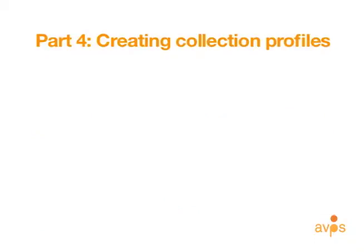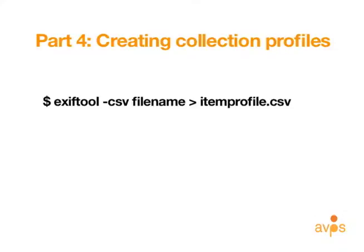Before we jump into creating a collection profile, let's review how to create an item level profile. The syntax here includes the tool name, the CSV export option, the file name, and a redirect bracket that will create a CSV called item profile in the working directory. The result of this would be EXIFTOOL standard output for a specified file exported and formatted as a CSV file.